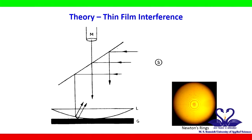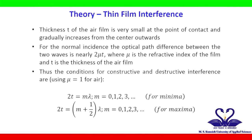Bright rings correspond to regions of constructive interference and dark rings correspond to regions of destructive interference. The thickness of the air film is very small at the point of contact of the lens and glass plate and increases from the centre outwards.